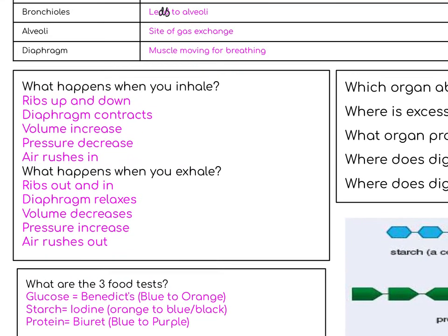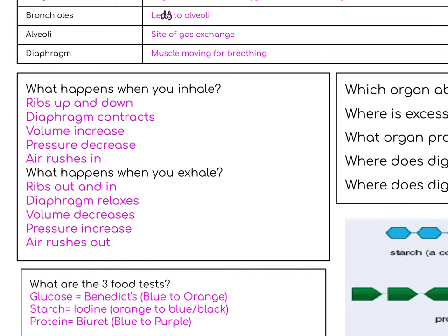What happens when you inhale? When you inhale, the ribs move up and out, the diaphragm contracts, the volume increases, the pressure decreases, and air rushes in. What happens when you exhale? The ribs move in and down, the diaphragm relaxes, the volume decreases, pressure increases, and air rushes out.